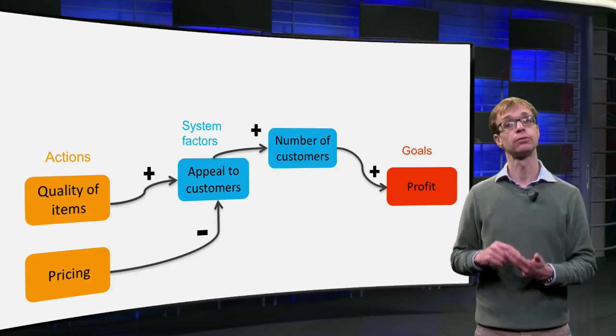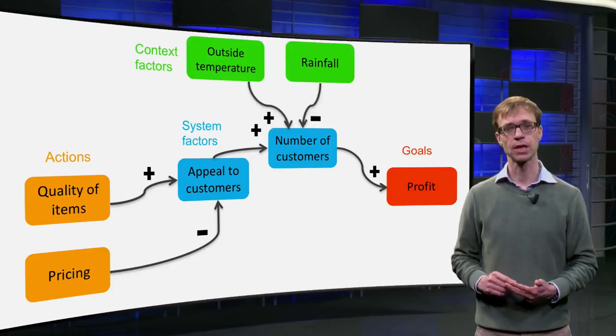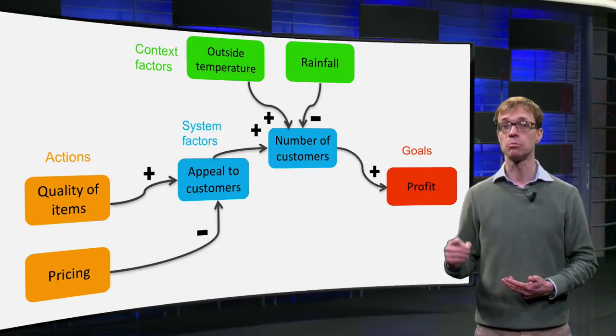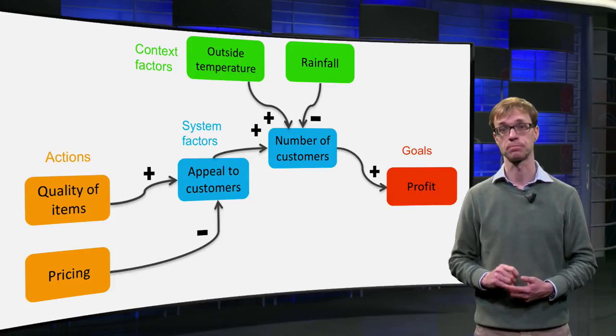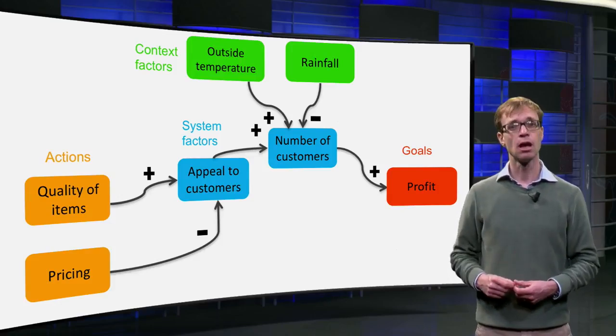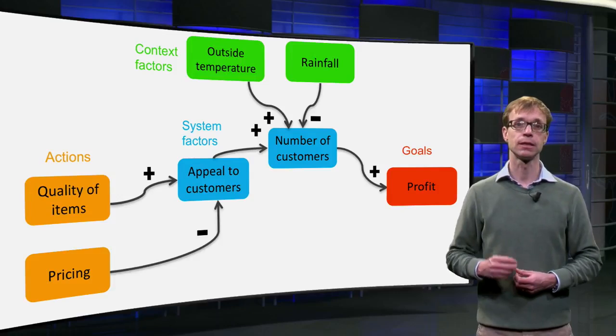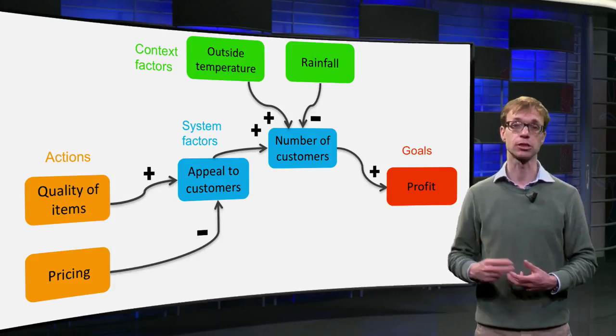And then there are fourth context factors. These also influence system factors, but they are beyond the sphere of influence of the decision maker. For instance, on a very cold or a very rainy day, there will be fewer customers in the shop.